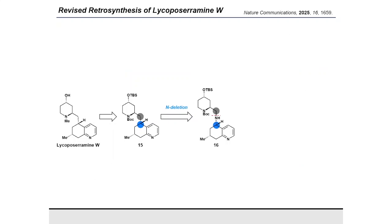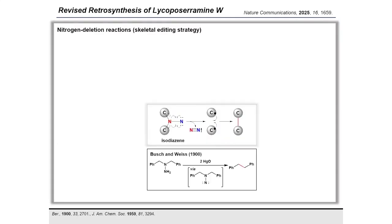We then decided to examine a nitrogen deletion reaction, in which a new C–C bond is formed from a secondary amine. The mechanism of this skeletal editing reaction includes an encaged diradical coupling, which is generated from an acetohydrazine intermediate through nitrogen extrusion.